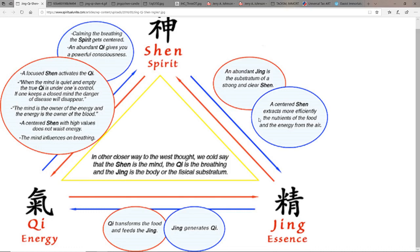Calming the breath, the spirit gets centered. An abundant chi gives you a powerful consciousness. A focused shen activates the chi. When the mind is quiet and empty, the true chi is under one's control. If one keeps a closed mind, the danger of disease will disappear. The mind is the owner of the energy, and the energy is the owner of the blood.